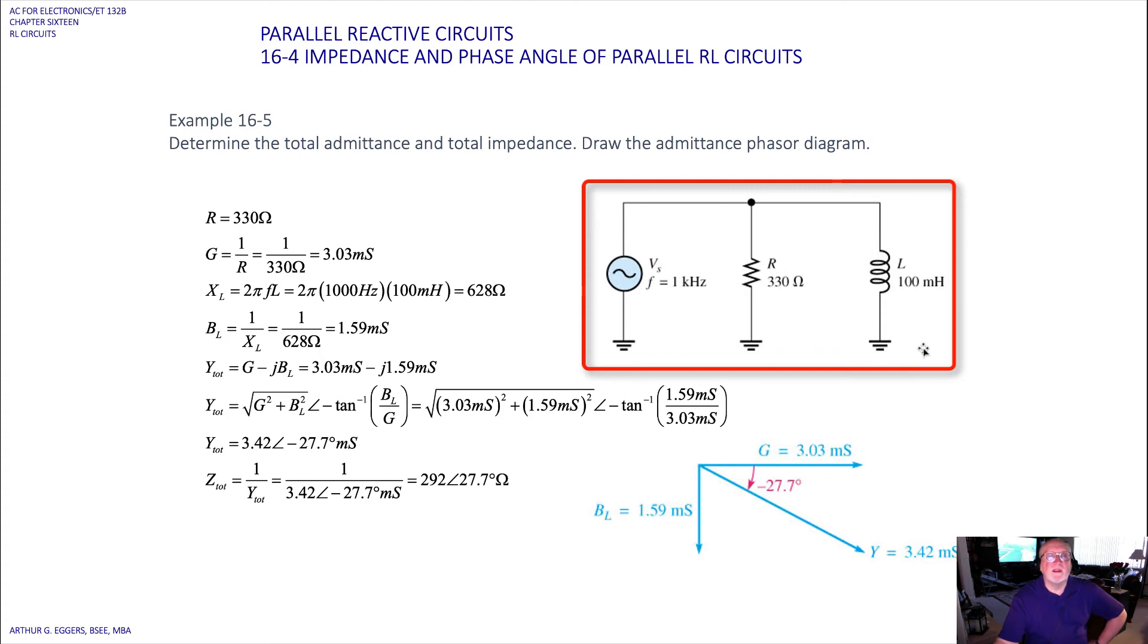Determine the total admittance and total impedance for the circuit. Draw the admittance phase diagram. So we have a parallel circuit, 1 kilohertz for our frequency at the input. We have a pure resistance of 330 ohms and we have an inductor at 100 millihenrys.